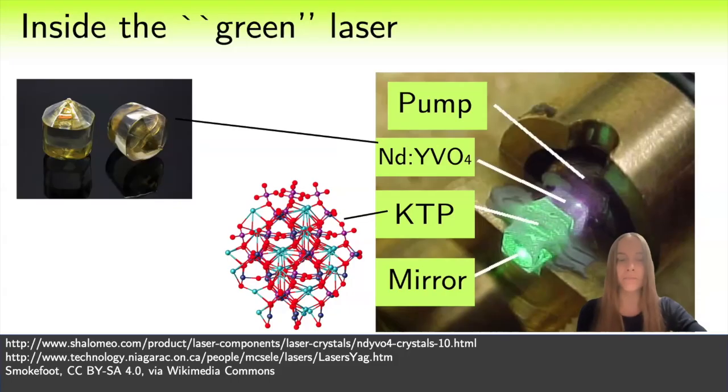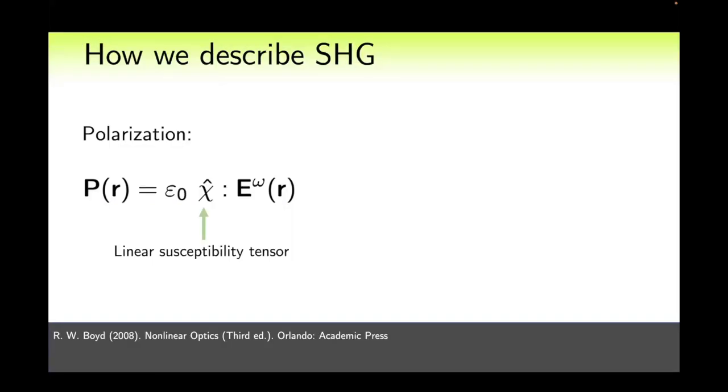What does it mean? So what is so special about this crystal that it allows us to convert light into light with a doubled frequency? This effect is called second harmonic generation.